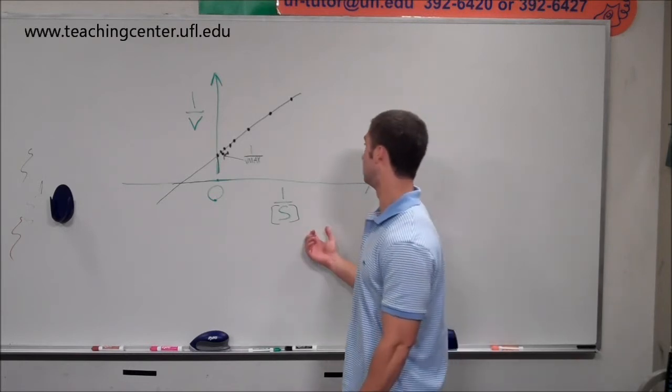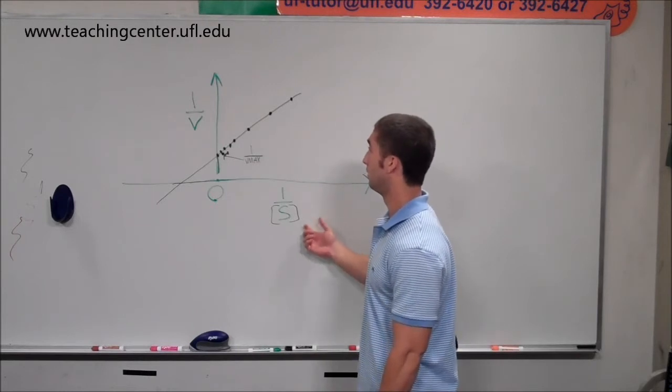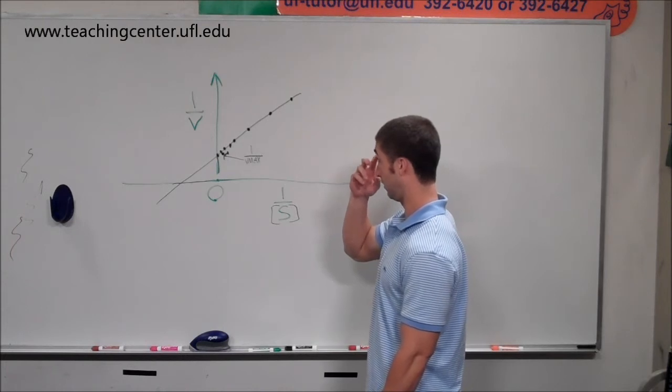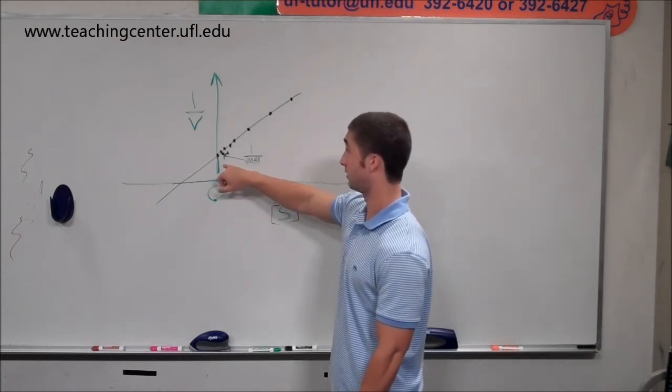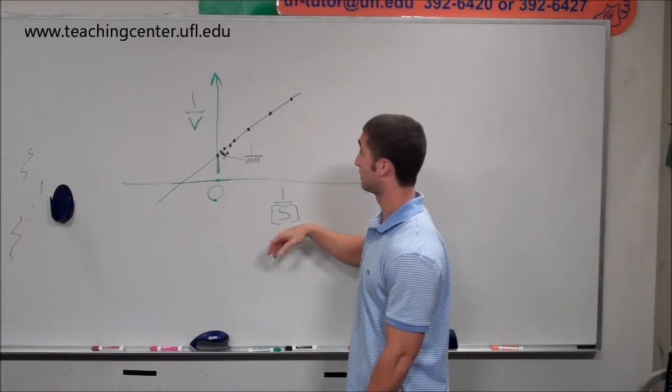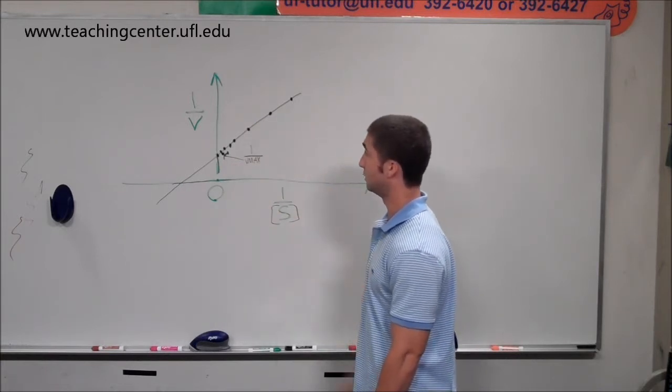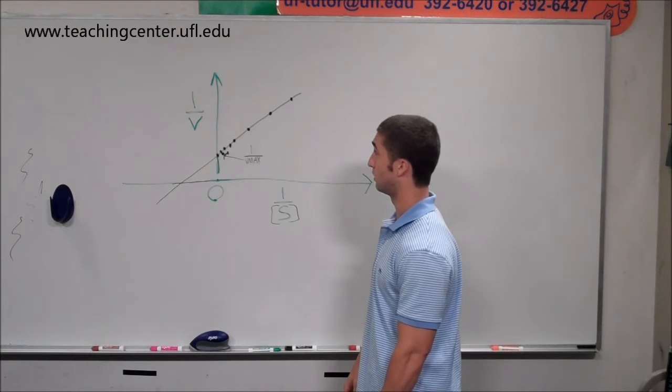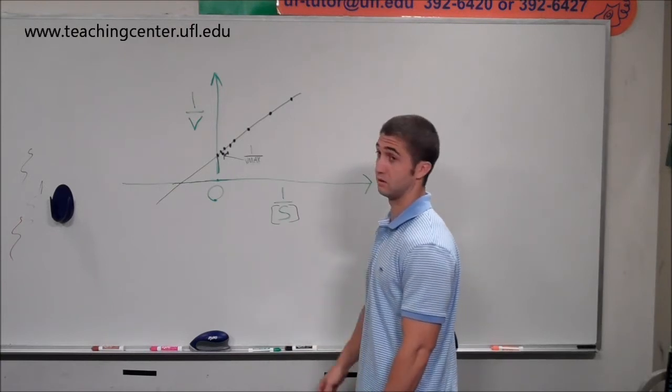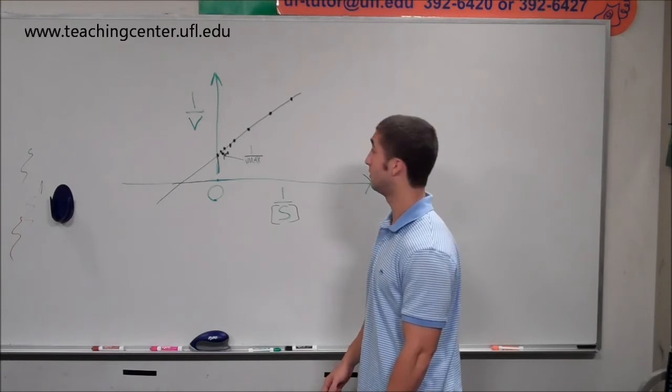So this is a typical double reciprocal plot. You have 1 over V and then you have 1 over your substrate concentration. Right here where the y-intercept is, you're going to have your 1 over Vmax. This is used as a quick way to determine a rough estimate of what your KT and Vmax is going to be.